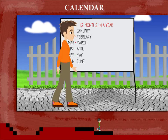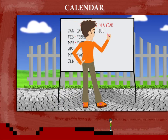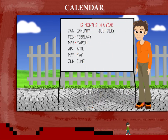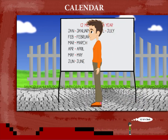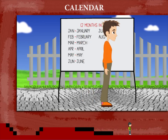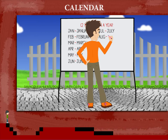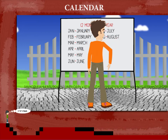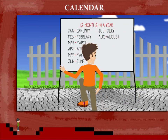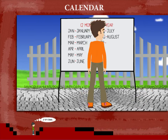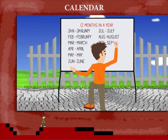Jul is the short form for July, the seventh month of the year. Aug is the short form for August, the eighth month. Next is Sep — it is the short form for September, the ninth month of the year.